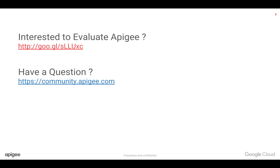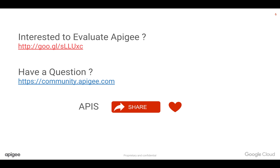We're going to see in action how to generate and verify a JWT token for your APIs in Apigee Edge very soon. If you have any questions, please feel free to post them at community.apigee.com. If you are evaluating Apigee Edge, you can reach out to us using the link provided. Please share this video with your friends and colleagues, and subscribe to our YouTube channel to get notified of future videos.